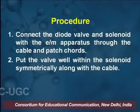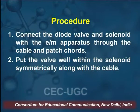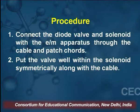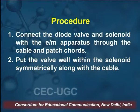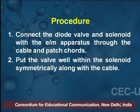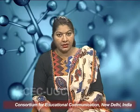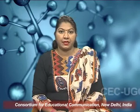What is the procedure to perform this experiment? In the first part, we connect the diode valve and the solenoid with the E by m apparatus through the cable and patch cords. We attach the solenoid to the E by m setup where we have the voltage and current measurement meters, and the solenoid connects with the E by m apparatus.